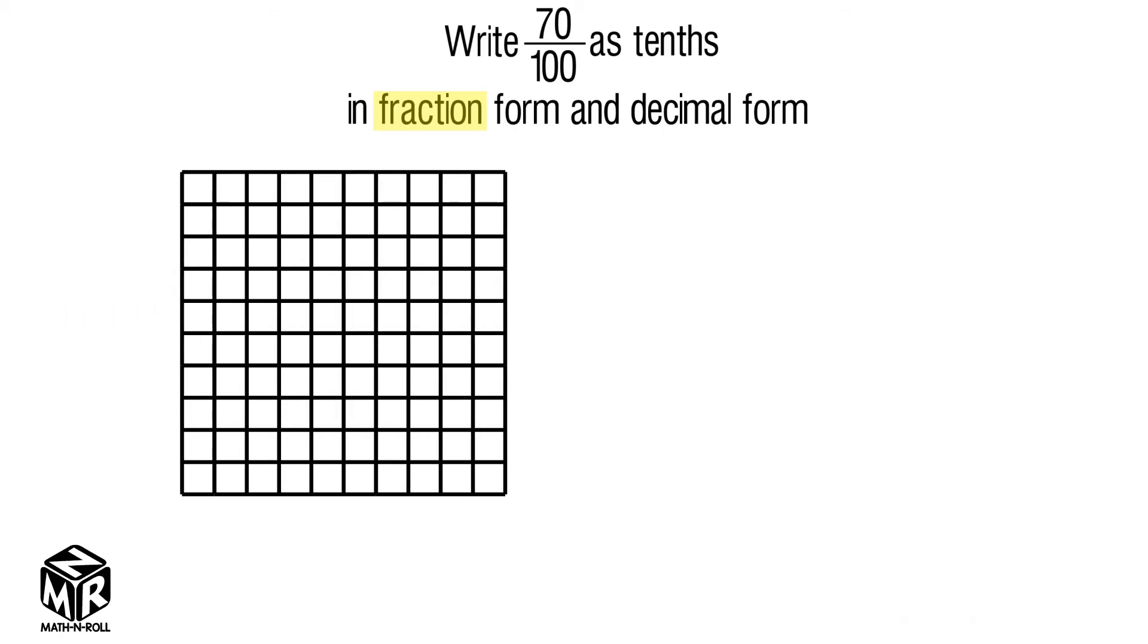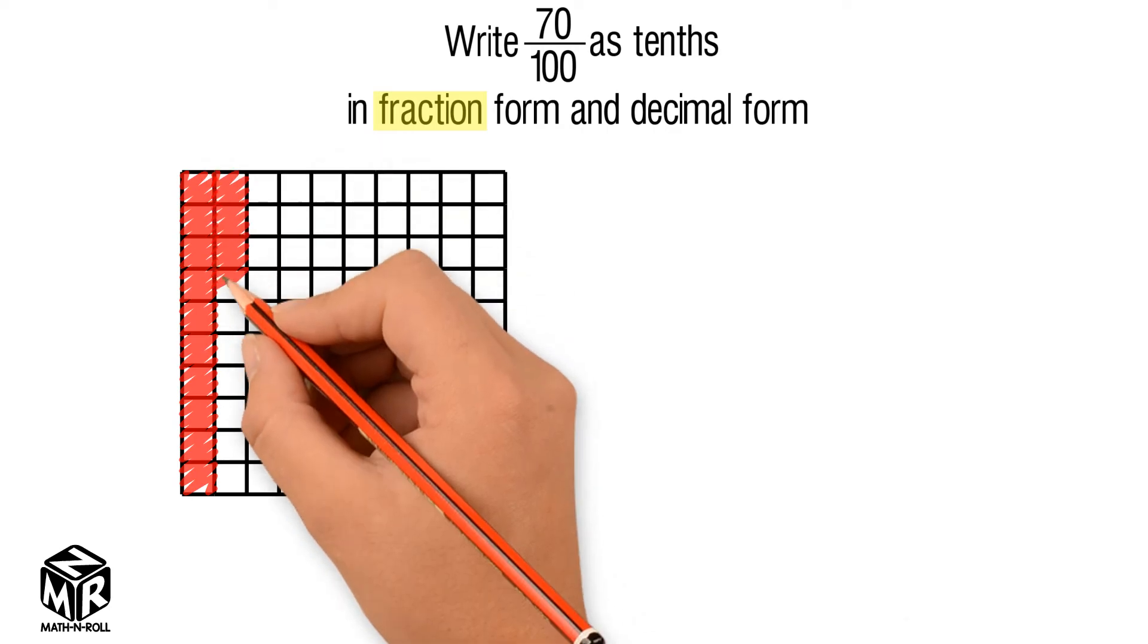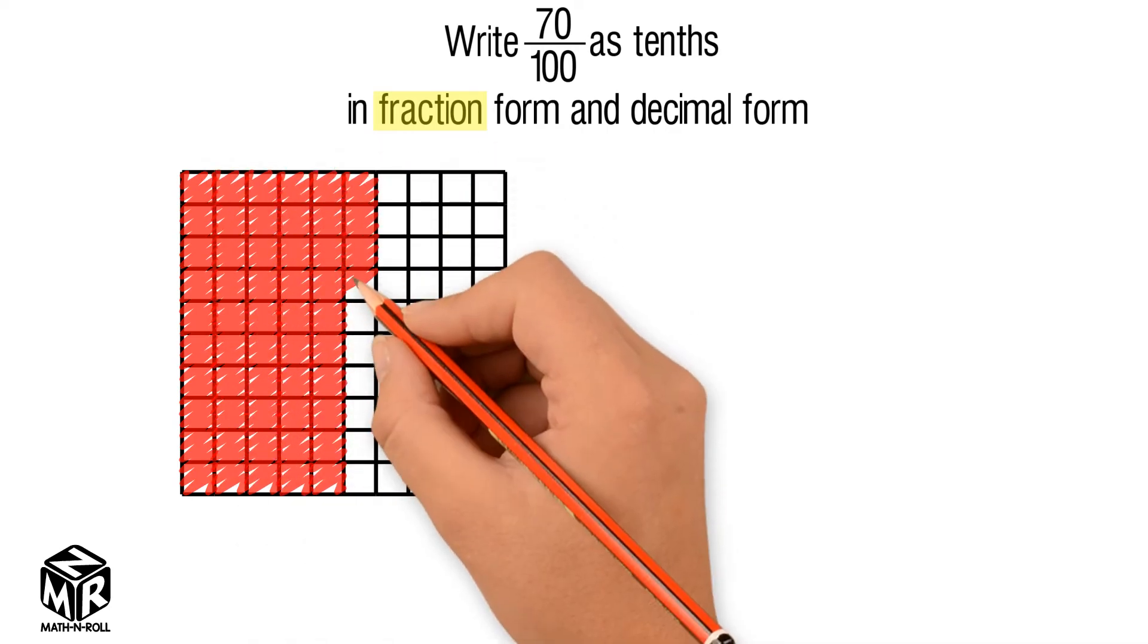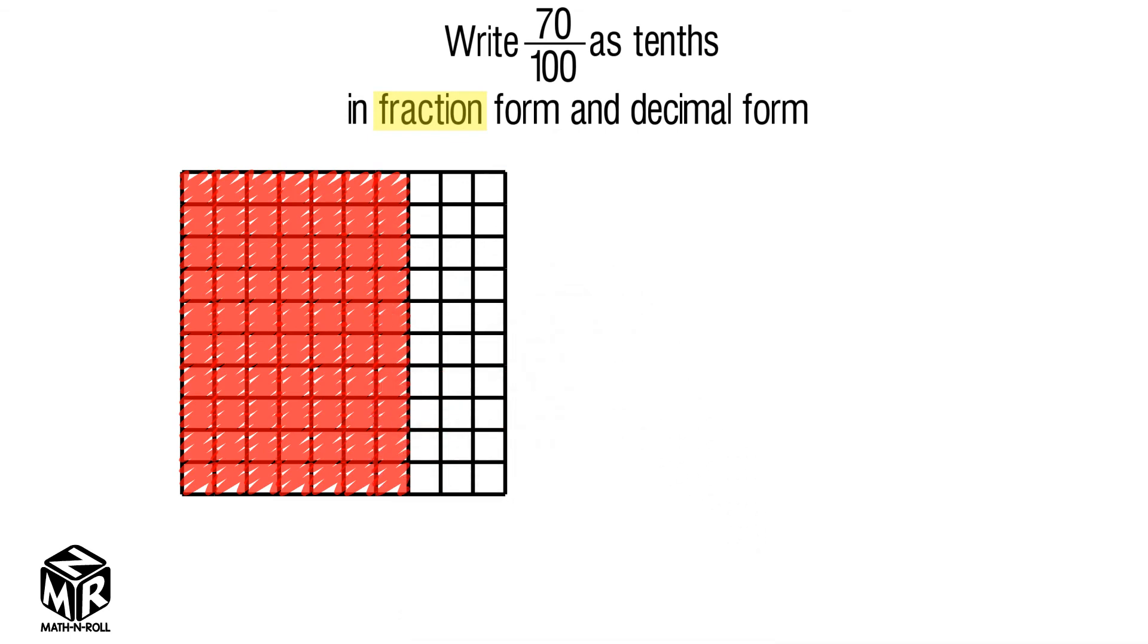Unlike the previous question, this model is already divided into 100 equal parts. Shade 70 parts. These 70 shaded parts represent the fraction 70 hundredths.